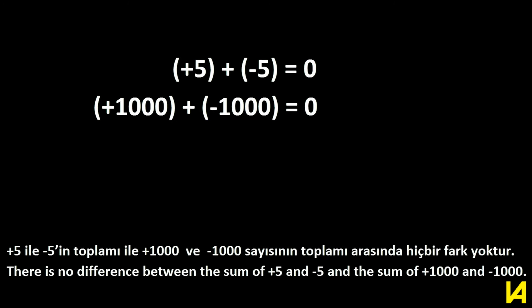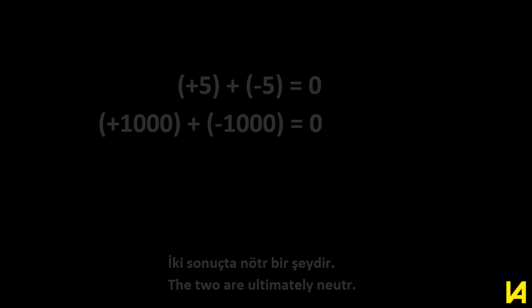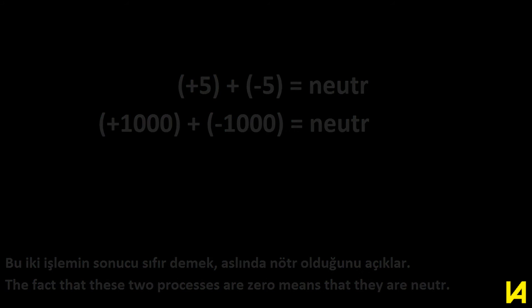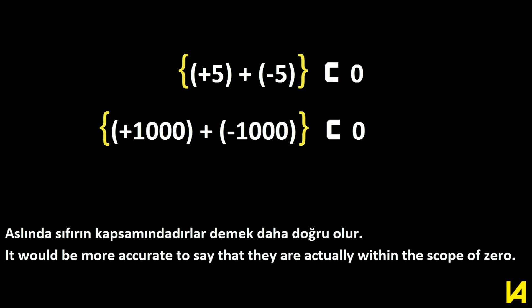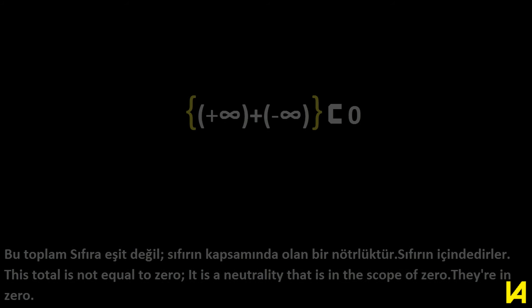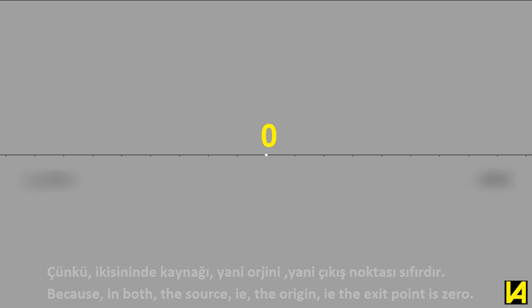This is exactly the zero point — neutral. At zero, everything is at its most intense, i.e., neuter. There is no difference between the sum of plus 5 and negative 5 and the sum of plus 1000 and negative 1000 — both are ultimately neuter. The fact that these two processes are zero means that they are neuter. It would be more accurate to say they are actually within the scope of zero. From this point of view, the sum of plus infinity and negative infinity is not a number; it is a neutrality that is in the scope of zero.